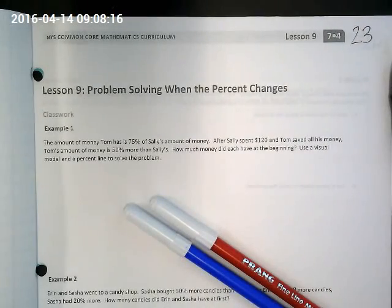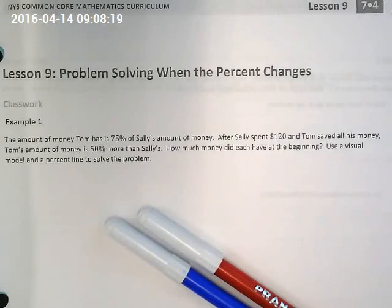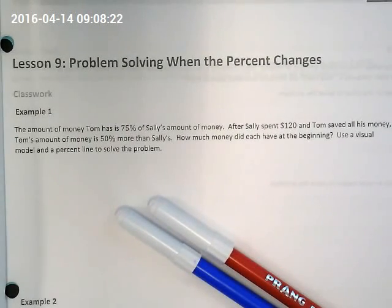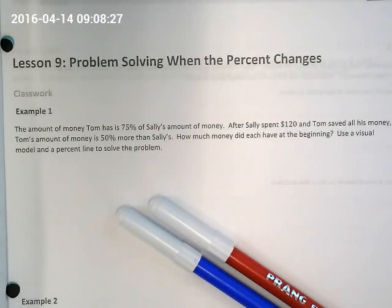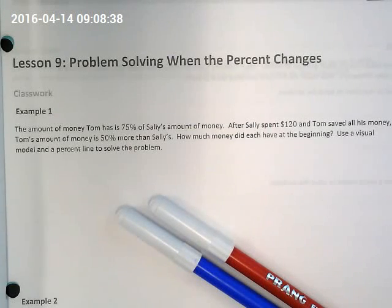Let's look first at example one: the amount of money Tom has is 75% of Sally's money. Think about just that part of the problem — who has the whole that we're comparing to? Sally has the whole.